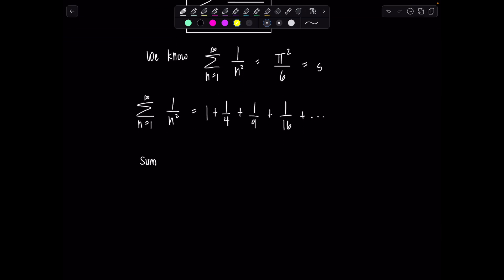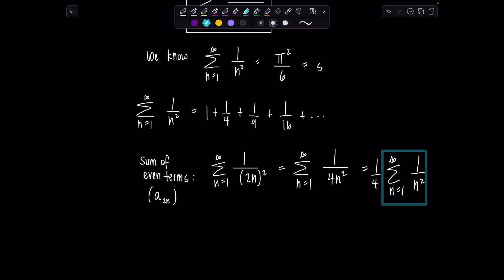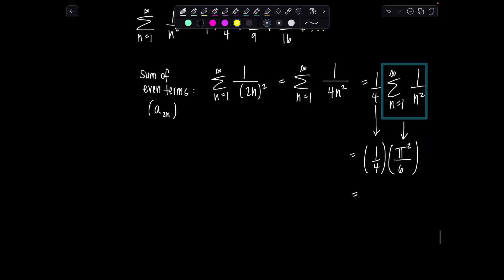I want you to first consider what the sum of the even terms are. Now the even terms are all of the terms that come from a sub 2n. So the sum of the even terms would be the sum n equals 1 to infinity 1 over 2n quantity squared. And if we simplify this, this is the sum n equals 1 to infinity of 1 over 4n squared, which is 1 fourth times the sum n equals 1 to infinity of 1 over n squared. So therefore the sum of the even terms would be 1 fourth of that, which is going to give me pi squared over 24.